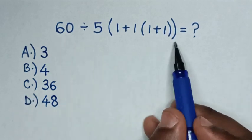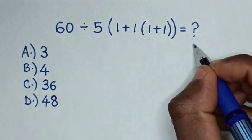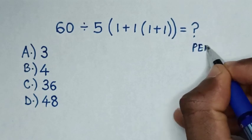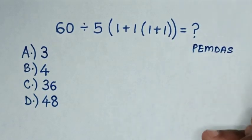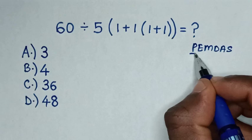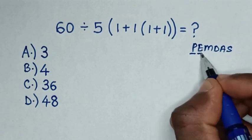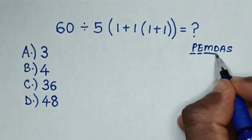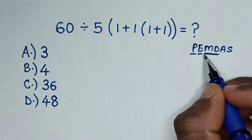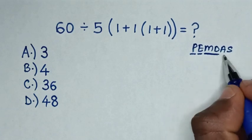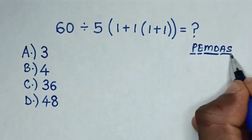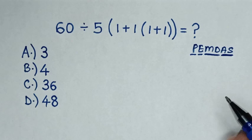So from this problem, we'll apply PEMDAS rule. PEMDAS, whereas P is parenthesis, E is exponents, M D is multiplication and addition from left to right, and A S is addition and subtraction working from left to right.